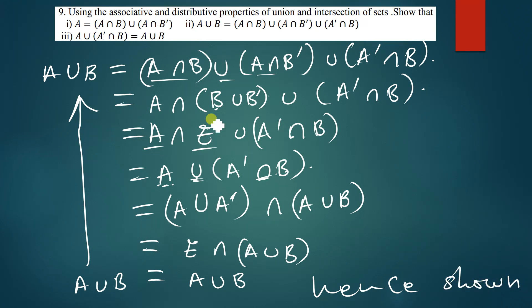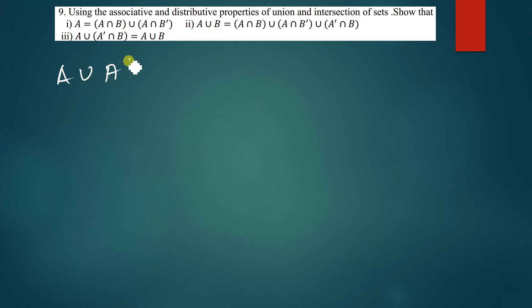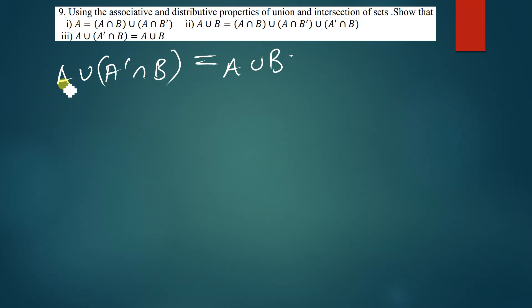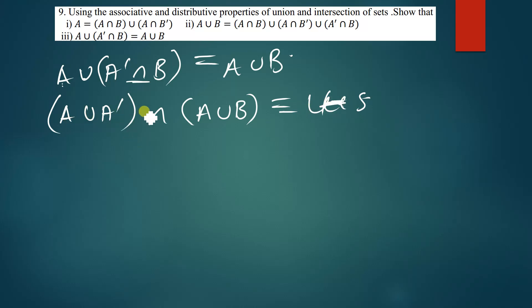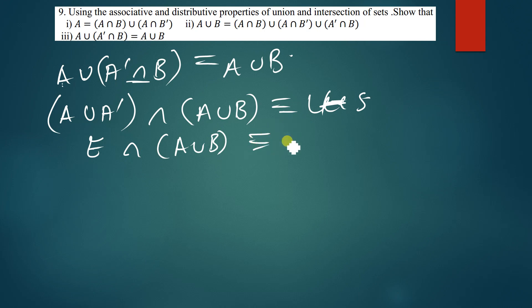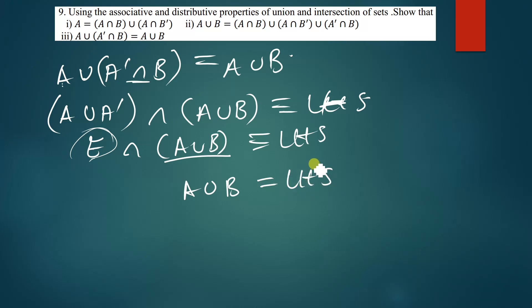The last question asks us to prove that A ∪ (A'∩B) equals A ∪ B. We distribute this part: (A ∪ A')∩(A ∪ B). A ∪ A' gives the universal set. The universal set intersected with (A ∪ B) gives us that same set. So the result is A ∪ B, which equals the left hand side. Hence shown.